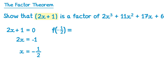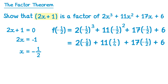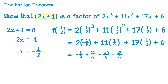So f of negative one half is 2 lots of negative one half cubed plus 11 lots of negative one half squared plus 17 lots of negative one half plus 6. Negative one half cubed is negative one eighth, so 2 lots of that is negative 2 over 8 which simplifies to negative one quarter. Negative one half squared is positive one quarter so we have plus 11 quarters. 17 lots of negative one half is negative 17 over 2, and then plus 6. Writing everything over 4: negative 17 over 2 is negative 34 over 4, and 6 is 24 over 4. Doing negative 1 plus 11 take 34 plus 24 gives 0. So f of negative one half equals 0, confirming 2x plus 1 is a factor.